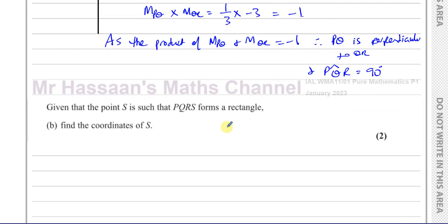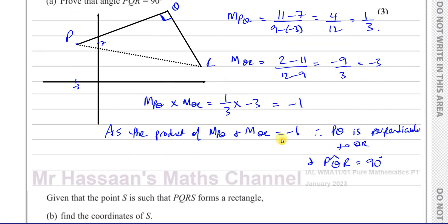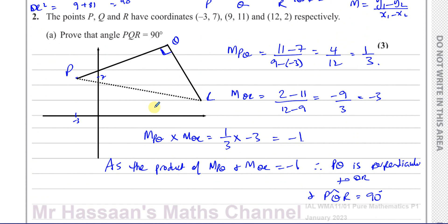Part B says, given that the point S is such that PQRS forms a rectangle, find the coordinates of S. So you have PQRS, so S is going to be somewhere over here. We've got to find where S is. There's a few different ways of doing it. The easiest way I think of doing this is to ask yourself, how do you go from Q to P?